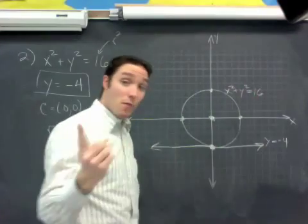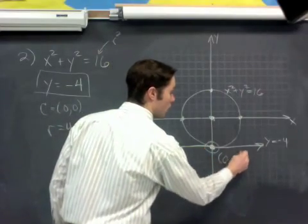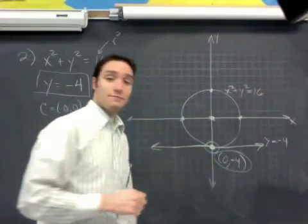And then, remember, the most important part is where do they cross? Right here. 0, negative 4. And we did another.